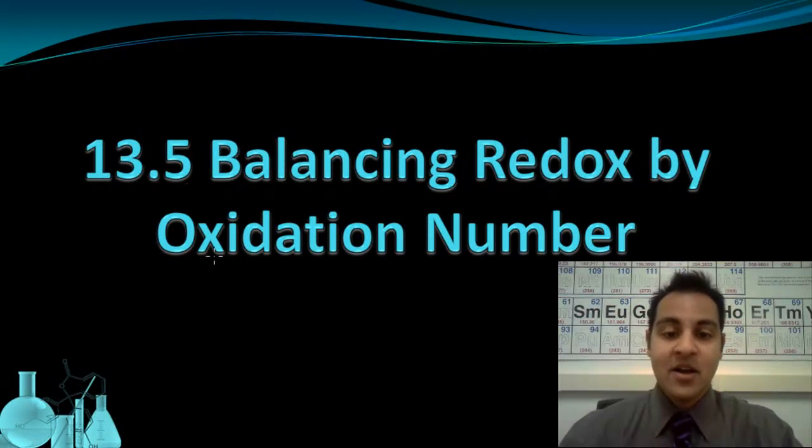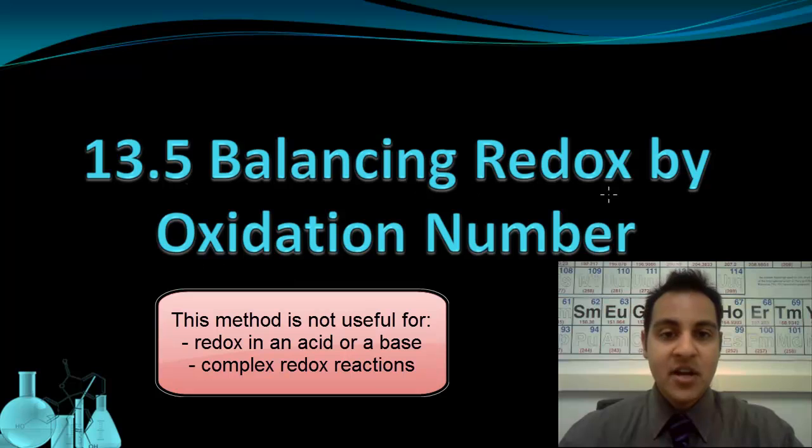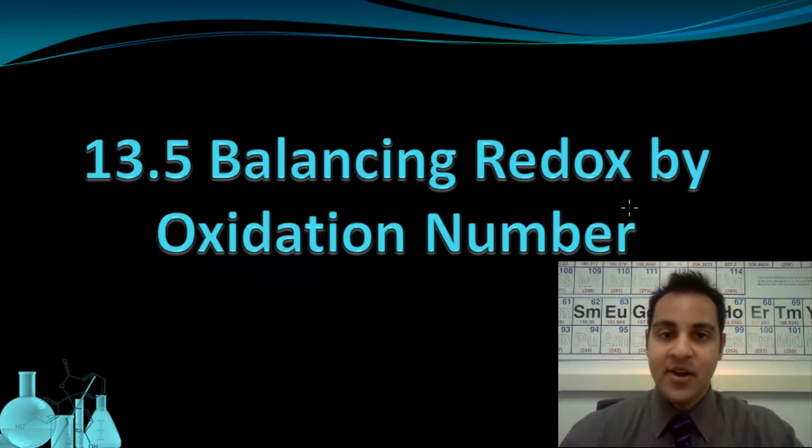Balancing redox by oxidation numbers is a simple method. It's only really keeping track of the oxidation number changes and using that to balance the reaction. It's not that helpful when you are dealing with a redox reaction that takes place with an acid or a base, and it also is not as useful for the more complicated redox reactions.